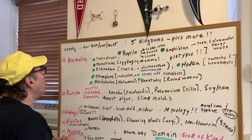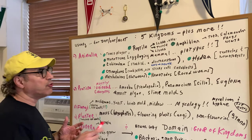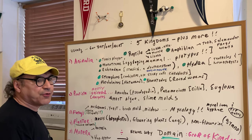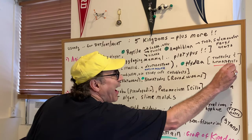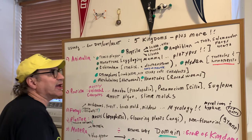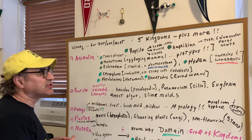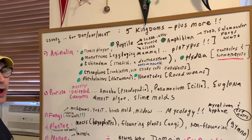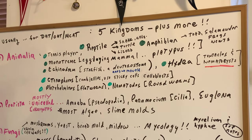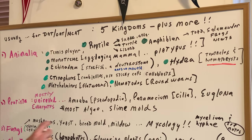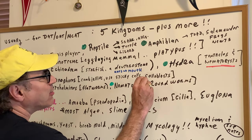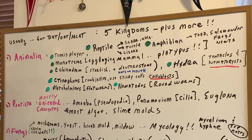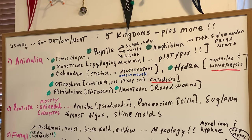Hydra is also in Kingdom Animalia — those little organisms with tentacles. The stinging cells are called nematocysts, which is a sure test question. Ctenophores are another good one in Kingdom Animalia — these are the comb jellies. They don't have nematocysts as their stinging cells; instead they have what's called coloblasts, which are sticky cells. Have a look at them — they're really cool looking.